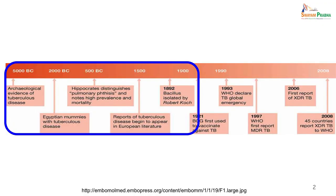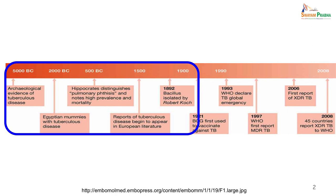Tuberculosis is not really new and dates back to 5000 BC when it was found in many archaeological places. These archaeological sites date back to 5000 BC. In 2000 BC, Egyptian mummies have shown evidence of tuberculosis. In 500 BC, Hippocrates also mentioned pulmonary phthisis. In the year 1500, there were reports of tuberculosis from European literature, and in 1882 the bacillus was isolated by Robert Koch. So the disease is not new — it is really old — it is only that it has become very epidemic now in our country.